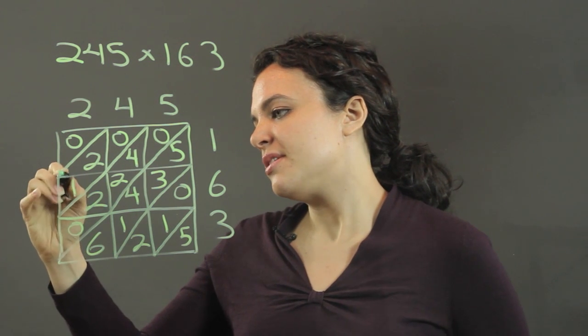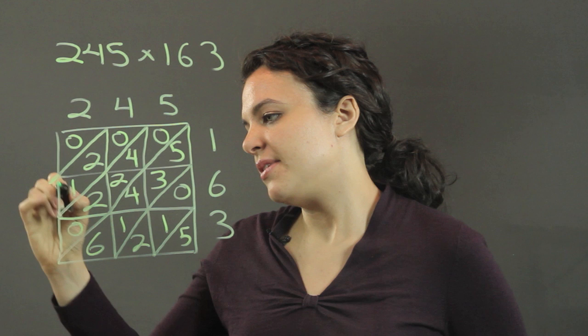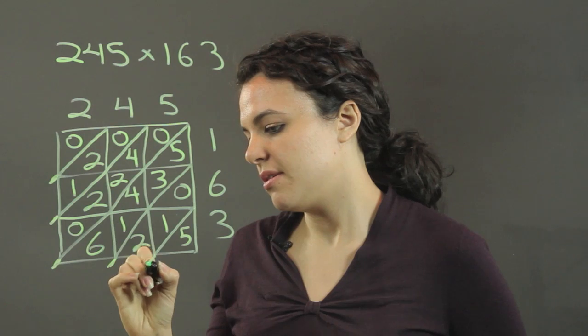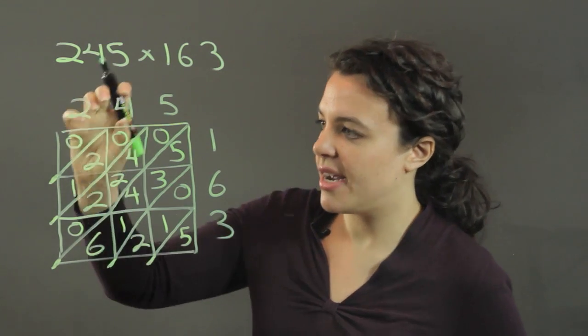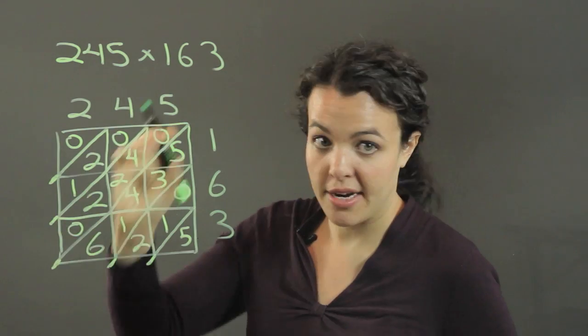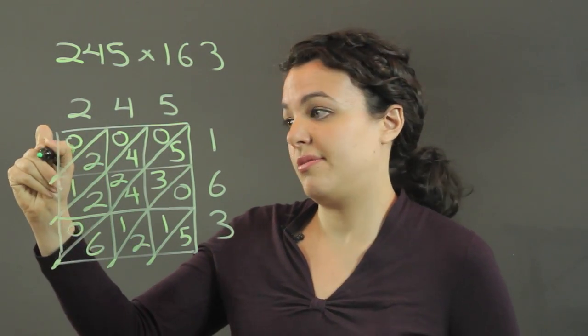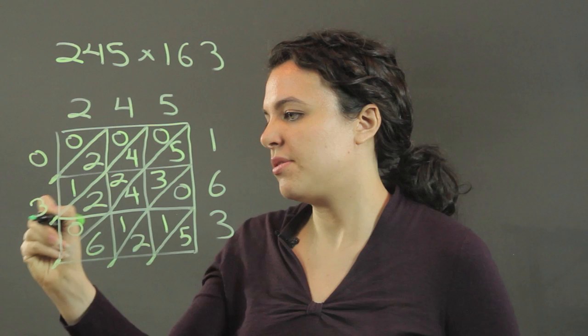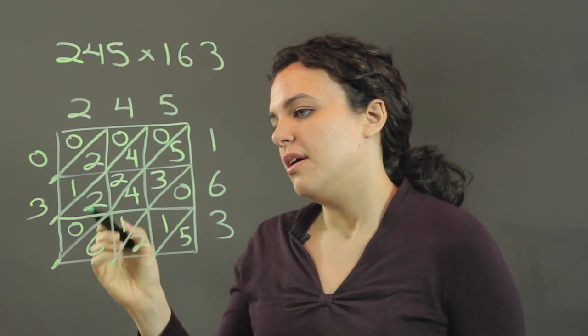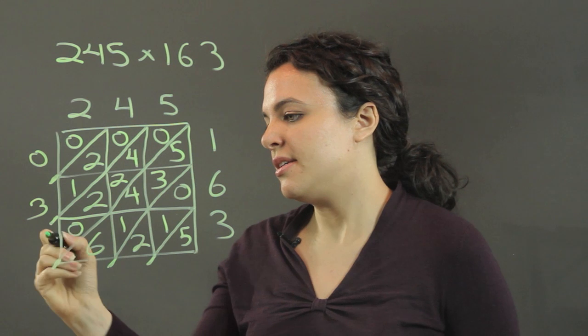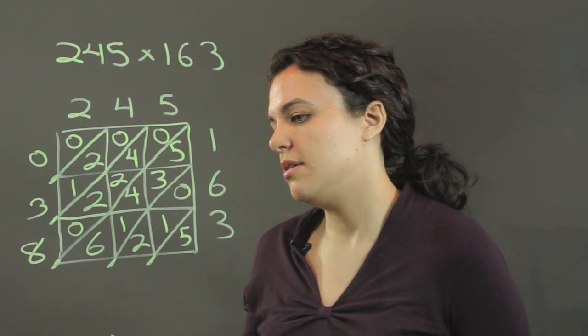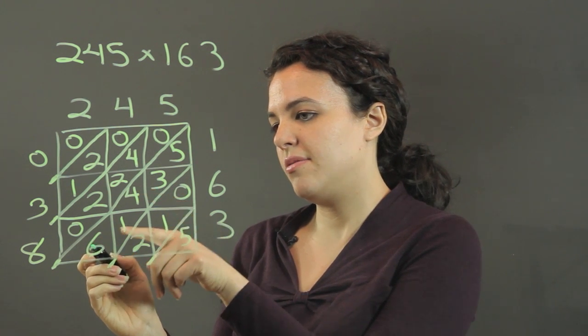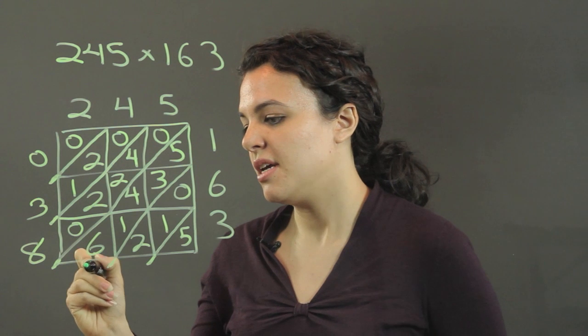And then what you can do is extend these just a little bit. And you're going to now add along these diagonals. So 0 just adds to 0, 0 plus 2 plus 1 is 3. I have here 8, 6 plus 4 is 10, 1 and 3, 14, 5 is 19.